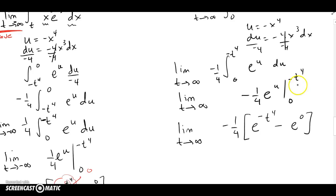So we put the limits of integration in, as before, e^0 is 1. And we got e^(-t^4) as t goes to infinity.